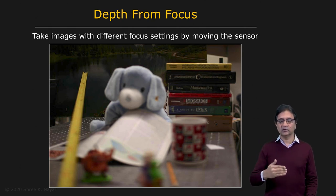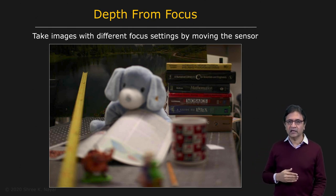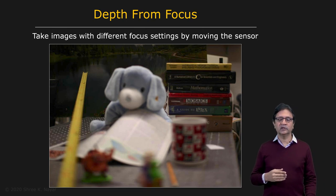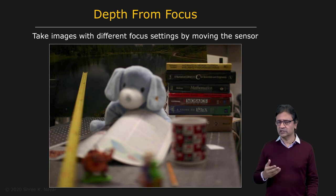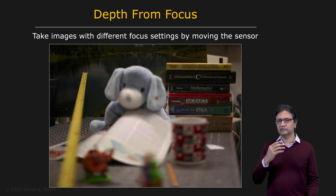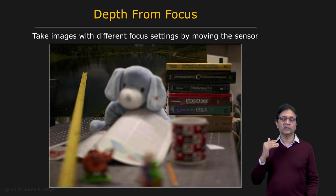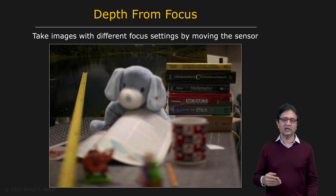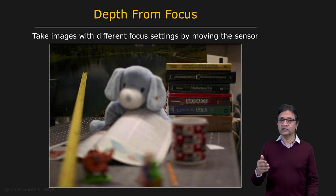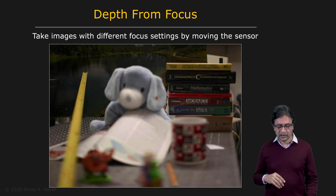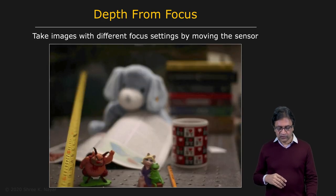You take a stack of images, called the focal stack. For each point in the image, or the patch around it, we ask: in which image in the stack is this point best focused? If you can find that image, we know what the plane of focus was for that image, and therefore we can estimate the depth of that point. We know the plane of focus for each image because we are controlling the camera system.